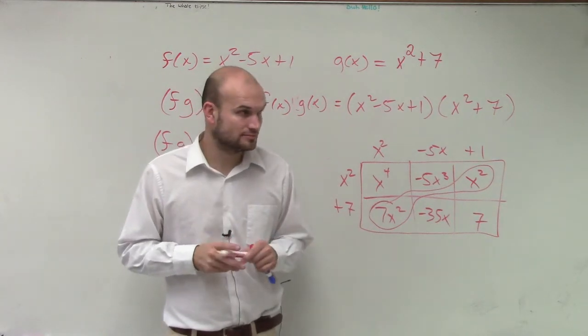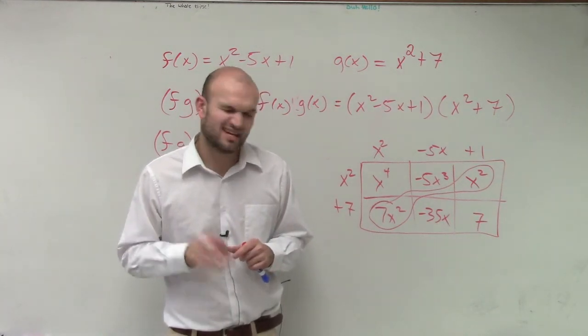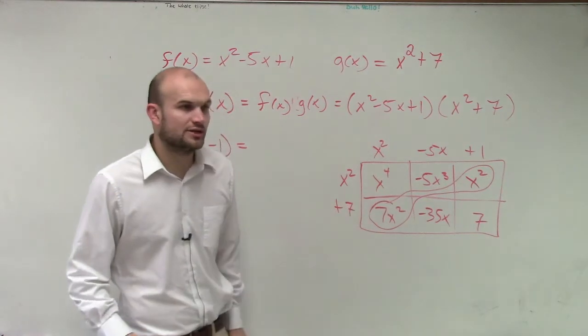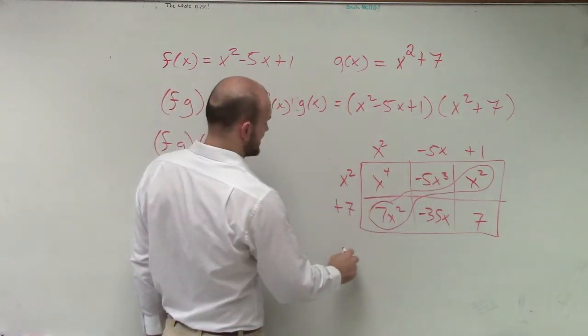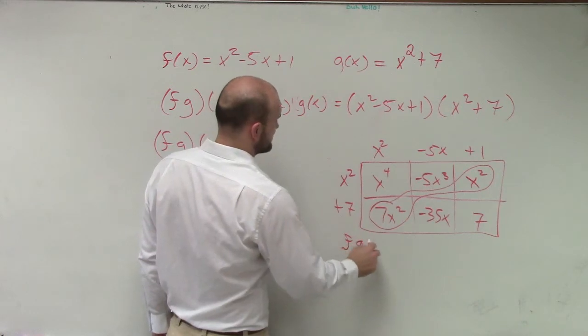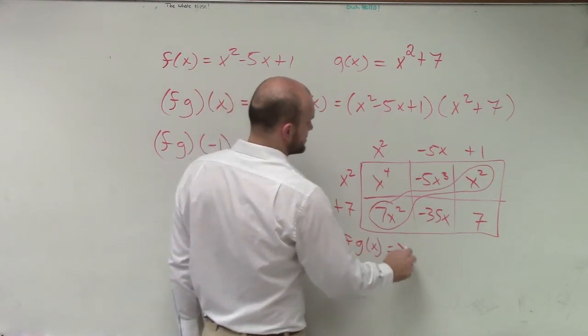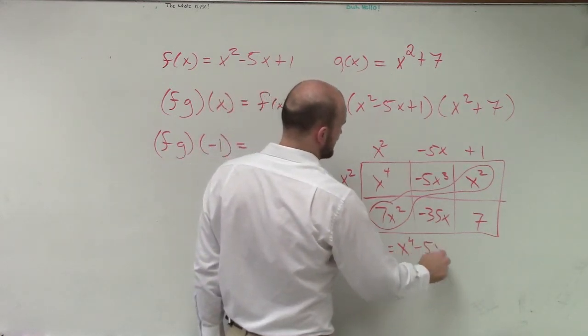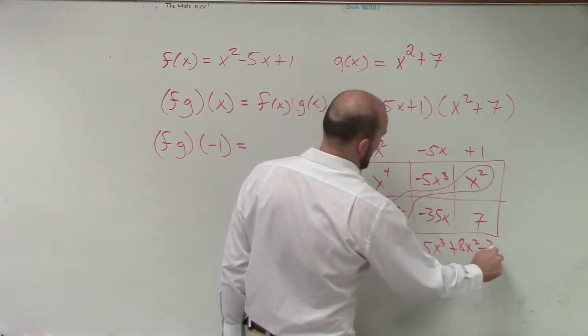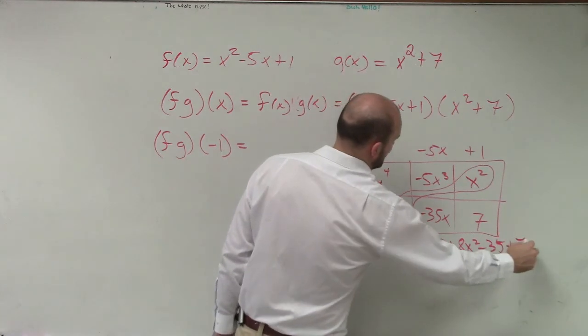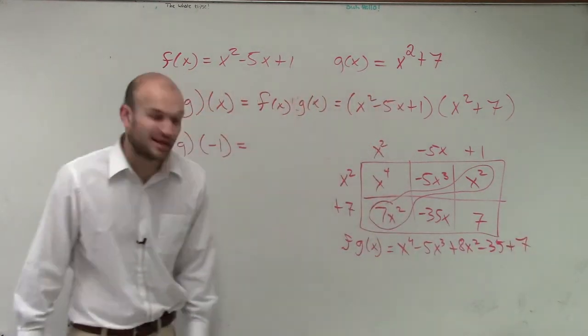All right. So now, ladies and gentlemen, now what we can do is we say, oh, I can combine these two, which will give us 8x squared. So I can say that f times g of x equals x to the 4th minus 5x cubed plus 8x squared minus 35x plus 7. Right? That's a big answer.